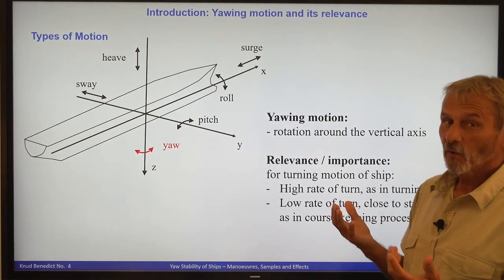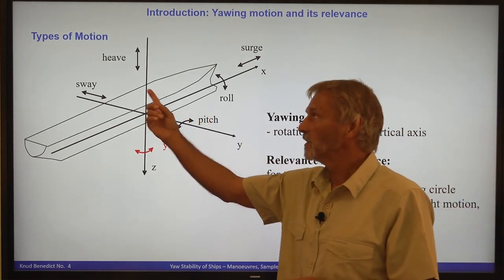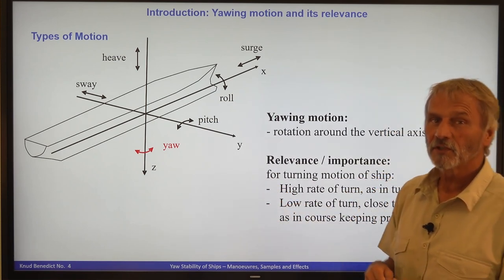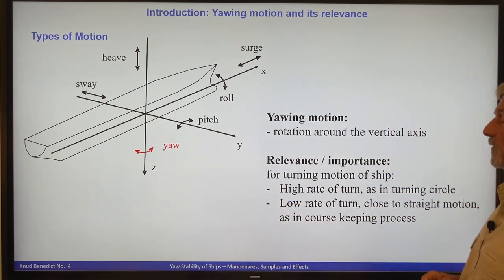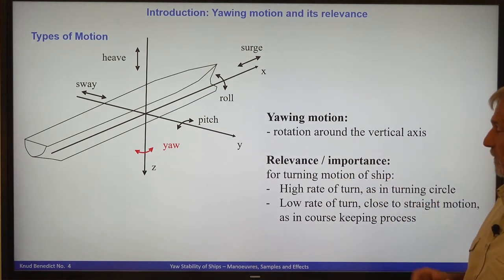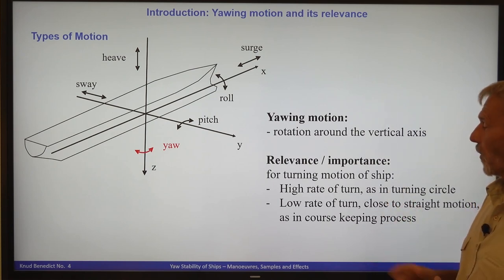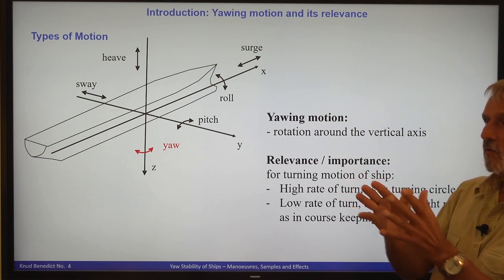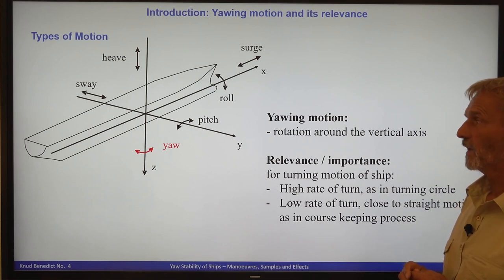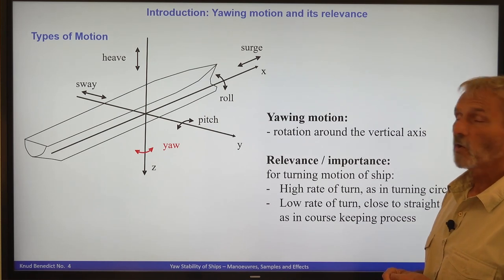The first question is: what is yawing? Yawing is the rotation around the vertical axis. So whenever the ship is turning there will be a yawing motion, and this is of importance for the turning motion of the ship at a high rate of turn, for instance in a turning circle, or at a low rate of turn if the ship is going nearly straight. Both conditions should be discussed when talking about yawing stability.